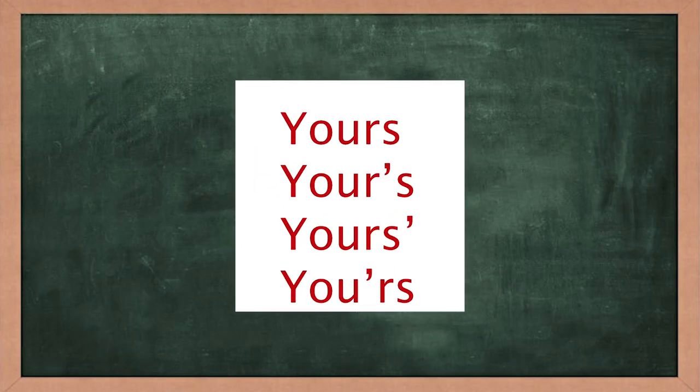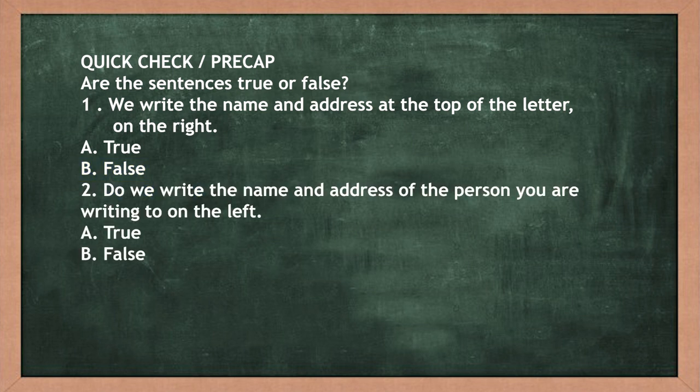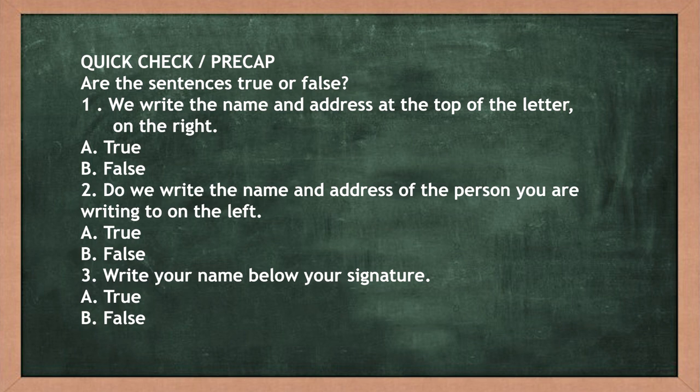Looks good! I really feel I can do it now! Not so soon — are you ready for a little test? No lesson is complete without a test! Yes ma'am, I'm ready — and I'm sure our viewers are also ready. Tell me, what is the correct form of writing 'Yours'? You have four options. I think the correct answer is the first one. Absolutely right! Now true or false: we write the name and address at the top of the letter on the right — False. We write the name and address of the person we're writing to on the left — True. We write our name below our signature — True. You got it absolutely right!